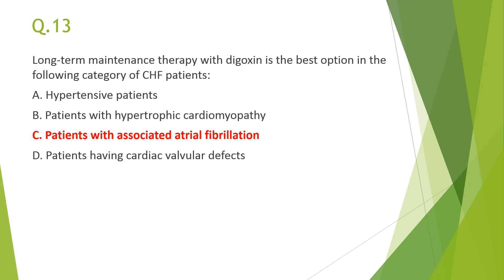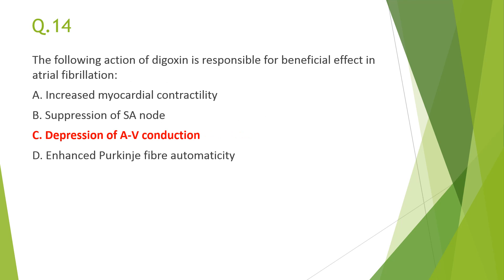Next: long-term maintenance therapy with digoxin is best for CHF patients with associated atrial fibrillation — answer C — because digoxin controls ventricular rate in atrial fibrillation and atrial flutter by delaying AV conduction. In other CHF categories without atrial fibrillation, digoxin is not preferred.